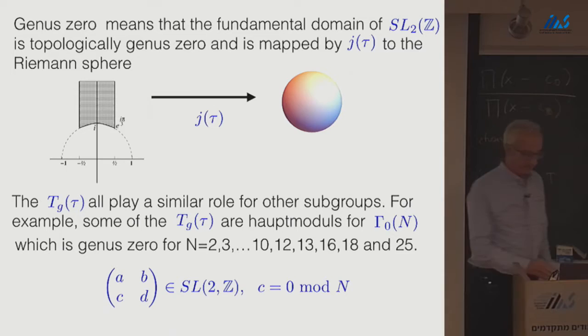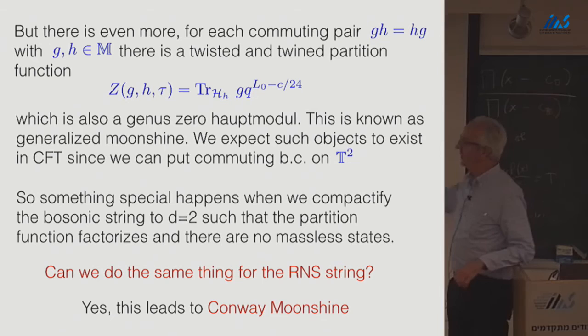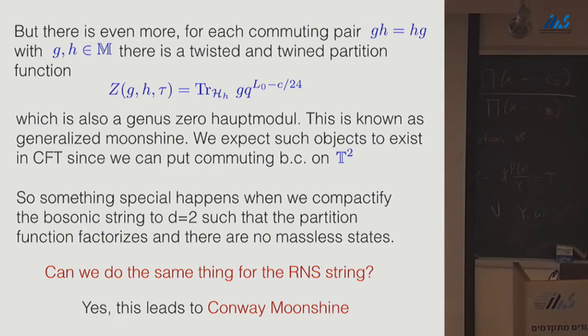There's even more, and here's the twisted and twined. And if you're a conformal field theorist, it's natural to think that if you have a commuting pair of elements in the monster, you can put a commuting pair of boundary conditions on the torus, since pi one of the torus is Z times Z. And therefore you can construct a twisted Hilbert space and compute the action of G on that twisted Hilbert space. This was first suggested by Norton, and then Lance Dixon, Paul Ginsberg and I gave a kind of conformal field theory interpretation of that.